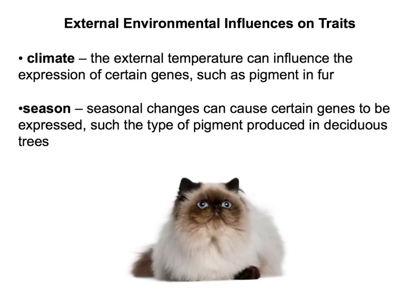Traits aren't just determined by DNA — external environmental influences can change how traits are expressed. Climate and temperature are one example: external temperature can influence the expression of certain genes such as pigment in fur. This Himalayan cat has darker fur in the coldest areas of its body — the face, ears, tail, and feet — while areas closer to the body core are white. This is due to how genes are turned on and off based on temperature. Seasonal changes can also trigger gene expression, like deciduous trees changing color in fall or animals growing white winter fur to blend with snow.